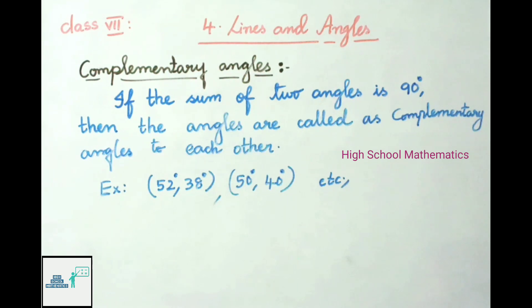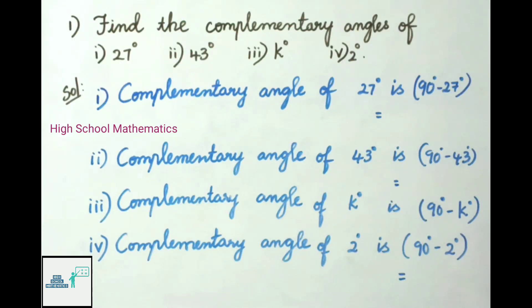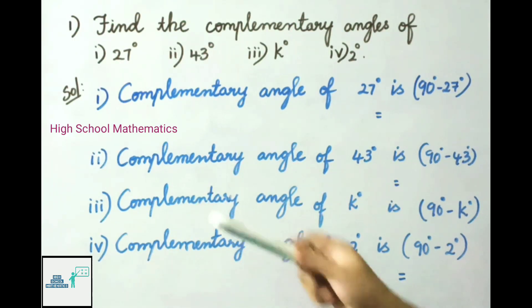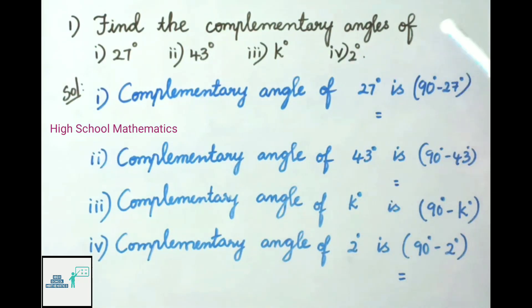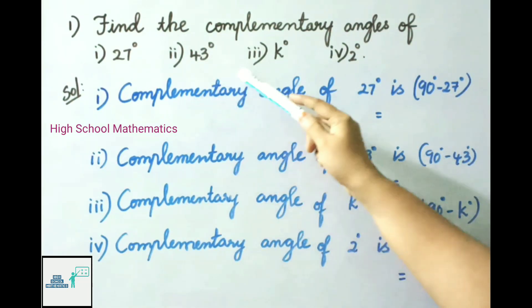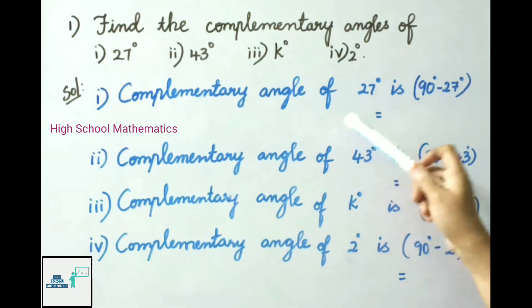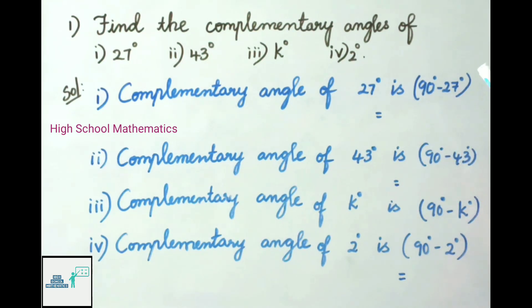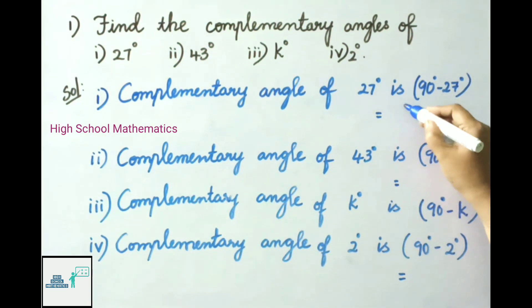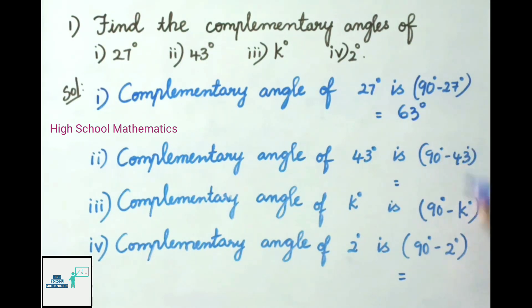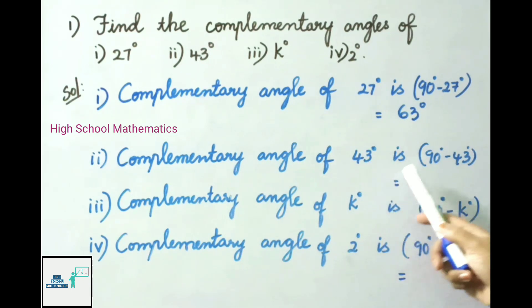Now let us see Check Your Progress. Find the complementary angles of 27 degrees, 43 degrees, K degrees, and 2 degrees. Let us see the solution. Complementary angle of 27 degrees is 90 degrees minus 27 degrees, that is 63 degrees. Second one: complementary angle of 43 degrees is 90 degrees minus 43 degrees, that is 47 degrees.